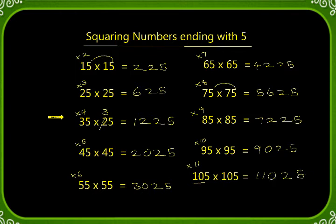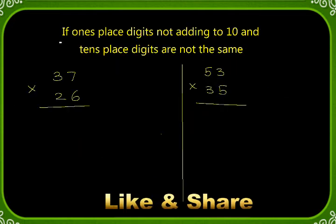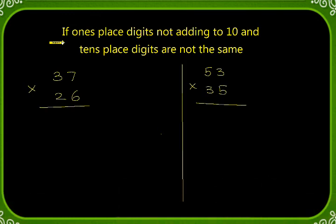Now I'm going to explain if the two conditions are not satisfied in any question - for example, if ones place digits are not adding up to 10 and tens place digits are not the same. This is very similar to my previous video in which I multiply 3 digit by 3 digit using this technique.